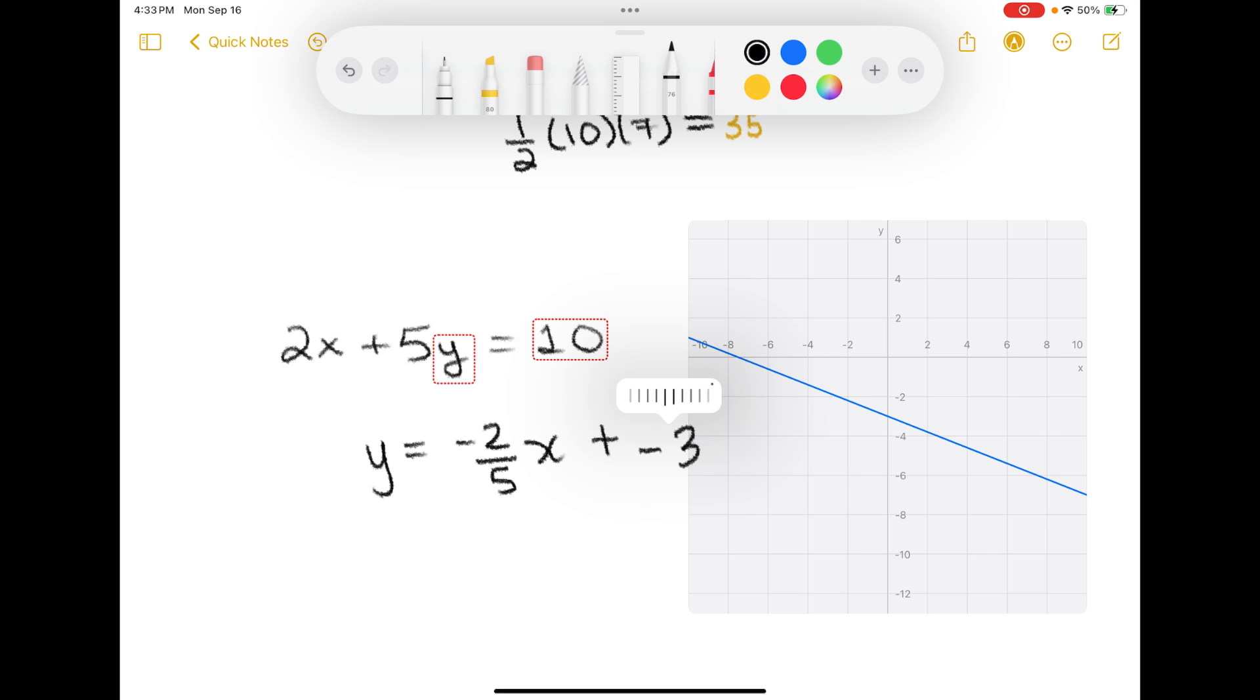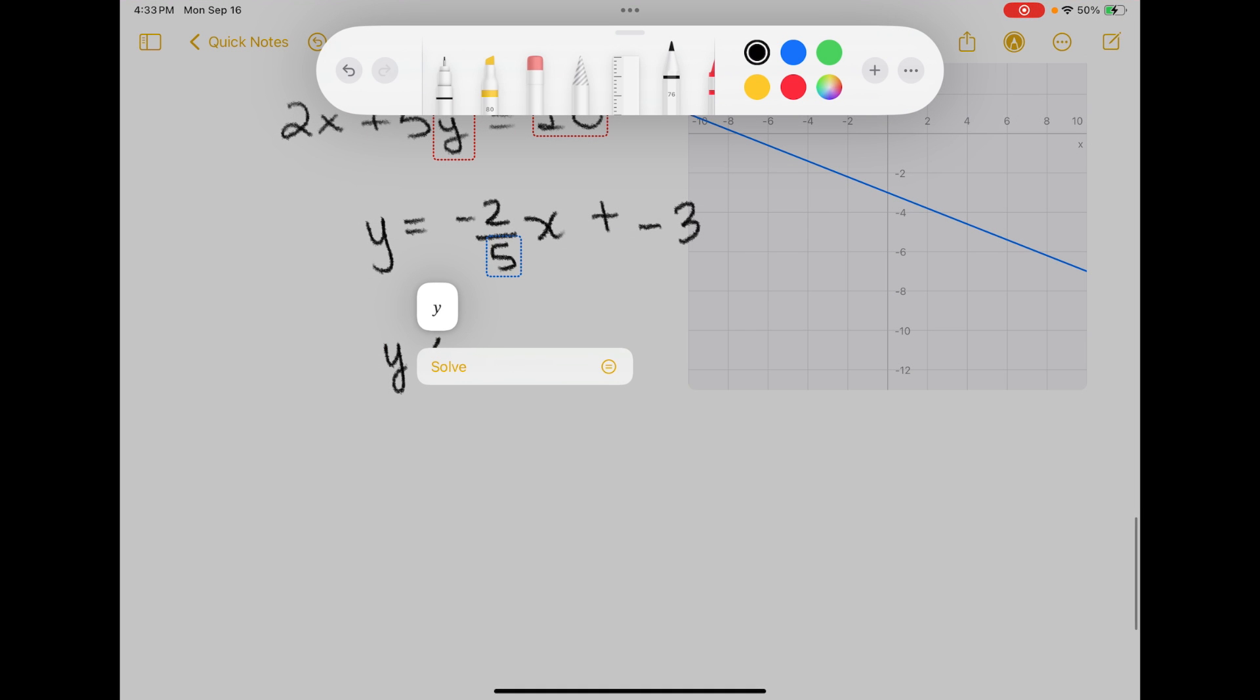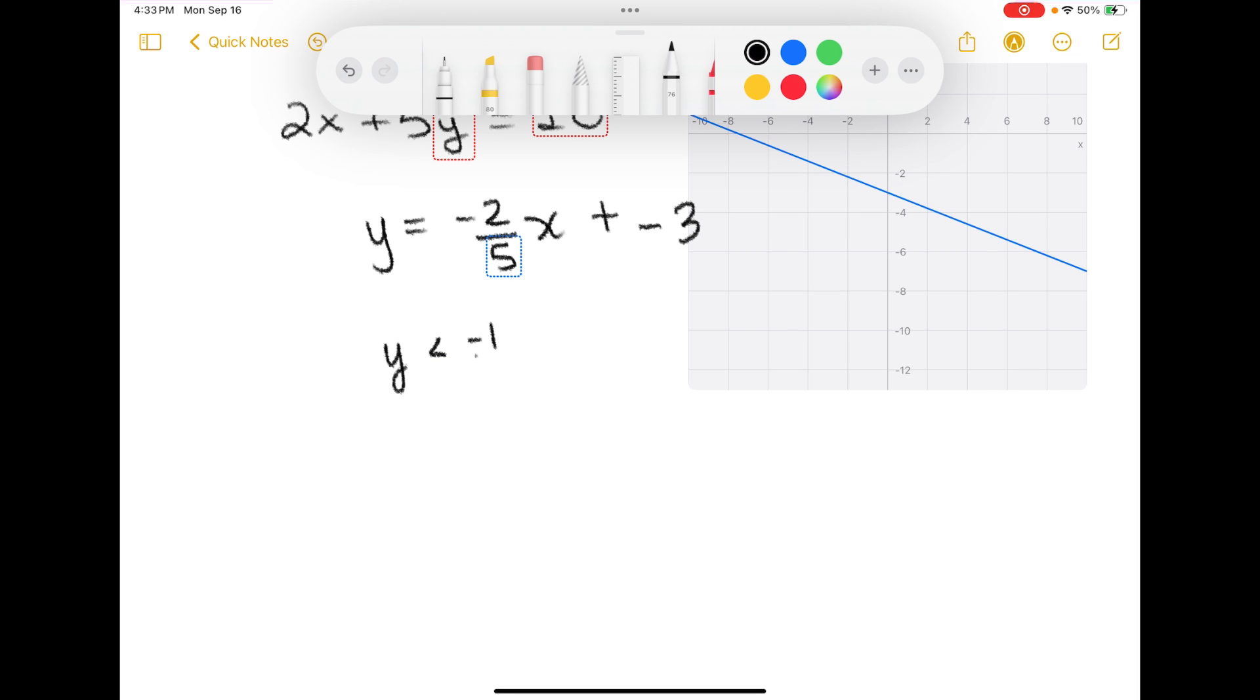I also tried inequality. So if I did y is greater than negative 3x plus 1. Well I did it earlier and what it did is it graphed the boundary line but it did not do the shading at all. I would still have to shade the graph.